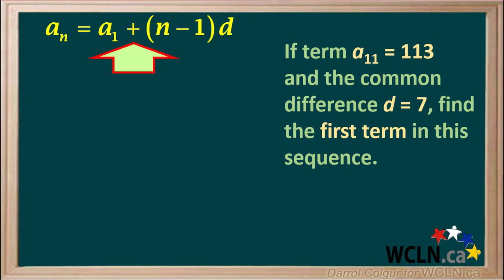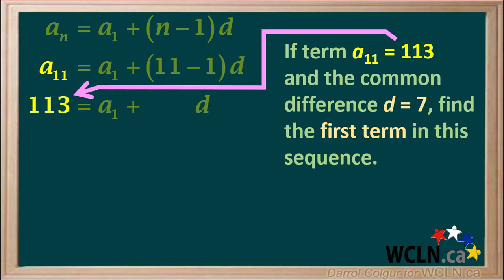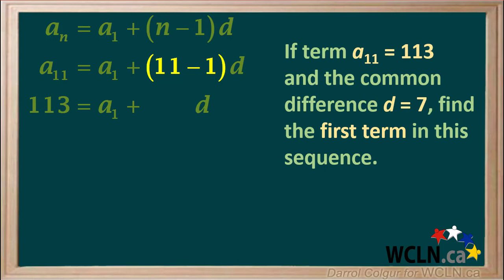We'll start by writing the general equation for an arithmetic sequence: an equals a1 plus n minus 1 times d. Because we're given the value for term a11, we replace n with 11 and n minus 1 with 11 minus 1. Term a11 is 113, so we replace a11 with 113. And 11 minus 1 equals 10, so we have the equation 113 equals a1 plus 10 times d.